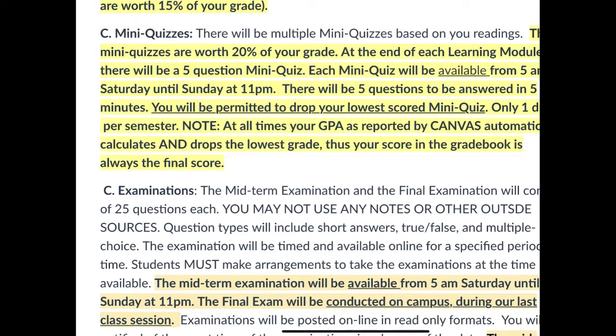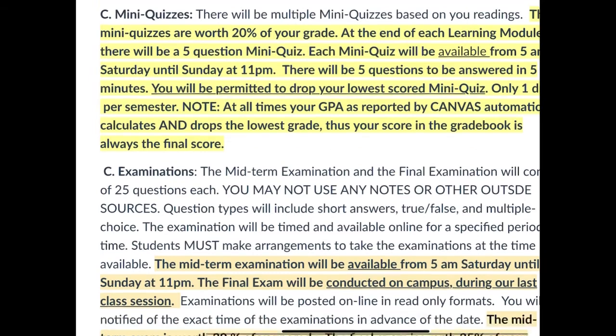Among the mini quizzes, if you bomb on one, you're going to be able to drop your lowest score — you only get one drop per semester. When you look at your grades on Canvas, it automatically calculates and drops the lowest grade. So whenever you look at that final grade score, it already dropped your bomb quiz if you ever bomb. Thus, your score in the grade book is always your final score.